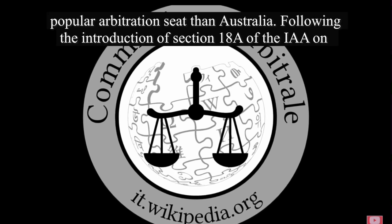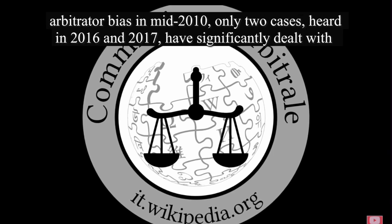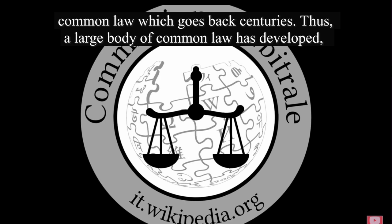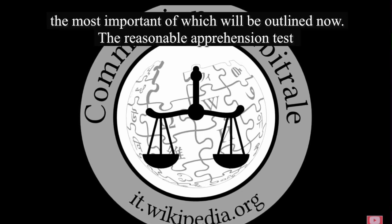Although no longer formally binding, Australia is still heavily influenced by English decisions. As evidenced in this article, both jurisdictions look at and rely upon court decisions of the other to help inform best practice. Due to the long-reigning authority of the Privy Council, Australia has had limited capacity to develop its own distinct common law. Additionally, England has had greater opportunity to develop and tailor their jurisprudence with respect to arbitrator bias, as they are a far more popular arbitration seat than Australia. Following the introduction of Section 18A of the IAA on arbitrator bias in mid-2010, only two cases — heard in 2016 and 2017 — have significantly dealt with this provision. Whereas England's arbitrator bias test is the same as judges', and is embedded in the common law which goes back centuries, a large body of common law has developed. The most important of which will be outlined now: the reasonable apprehension test.